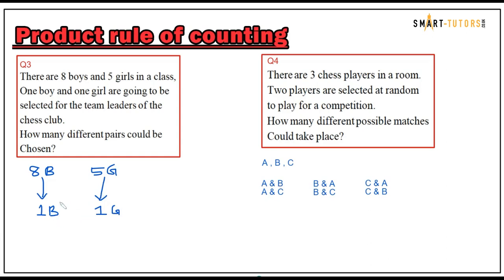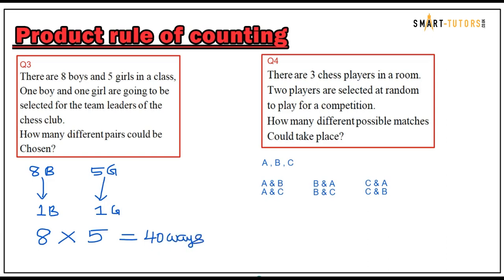How many different pairs could be chosen? Boys and girls are different groups — different entities. Out of eight boys you can choose one boy in eight ways. Multiply by the five different ways you can choose a girl. Eight times five gives 40 ways you can choose from.